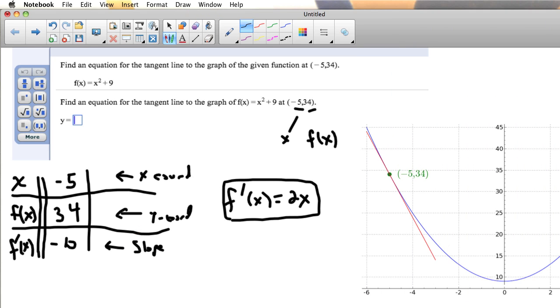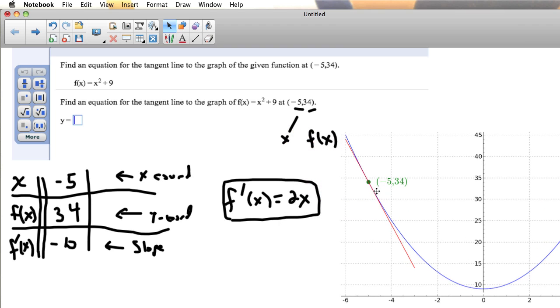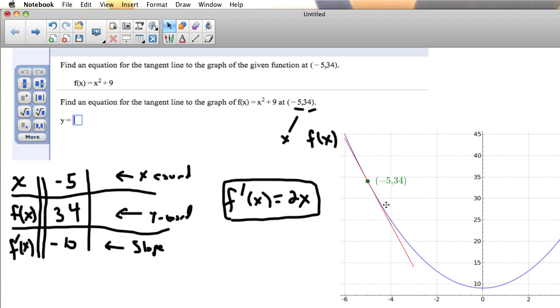I drew it on the computer so we could pull this over where we can see it. Here's the graph of the parabola. The blue curve here is y equals x squared plus 9. You can see that the point that has x-coordinates negative 5 and y-coordinates 34 lies on the curve, which is what we expect. Every time we plug an x into the formula to get an f of x, that's going to be a point on the curve. So negative 5 is the x-coordinate, 34 is the y-coordinate.